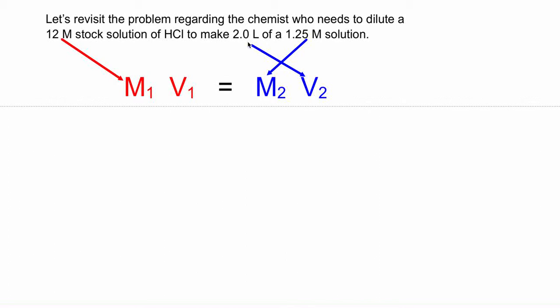The first thing we do is write down our equation and then start plugging numbers in. Remember, any numbers that deal with the stock solution — the strong concentrated solution we're starting with — go on the M1V1 side, and any number that deals with the diluted or final solution goes on the M2V2 side.